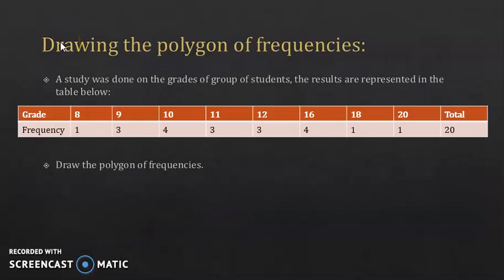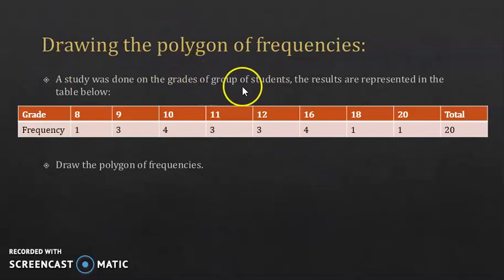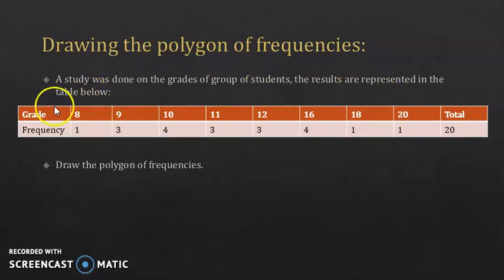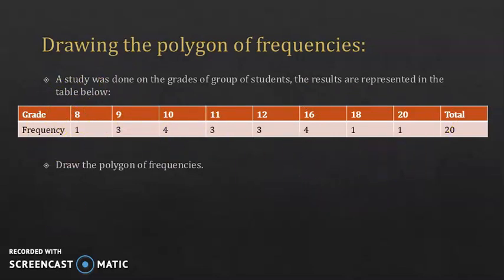Now, what if you're given the table and asked to construct the polygon of frequencies by yourself? In this example, a study was done on the grades of a group of students, and the results are represented in the table below. You have the grade, ranging between 8 and 20, and you have the frequencies. You're asked to draw the polygon of frequencies.